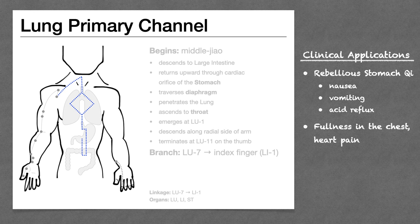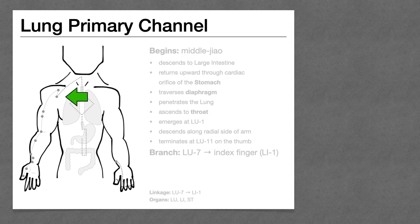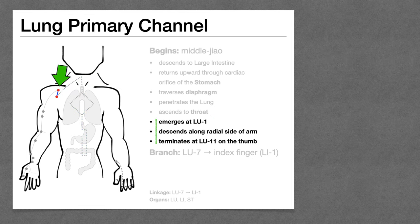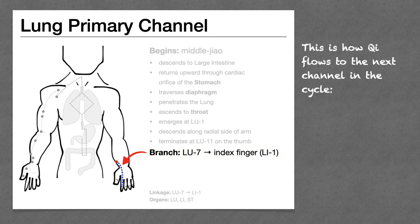Next, we see the channel making a nice diamond shape across the chest — so when we get to the point functions, we'll see points that can treat things like fullness in the chest or heart pain. The lung channel ascends to the throat, so it will be very important in treating things like sore throat, dry throat, or painful obstruction of the throat. After that, the channel emerges near the shoulder and its external pathway goes down the radial side of the arm to the thumb. Finally, there is a branch from Lung 7 to the index finger at LI1 — this is the path the Qi takes to get to the next channel in the sequence of flow.